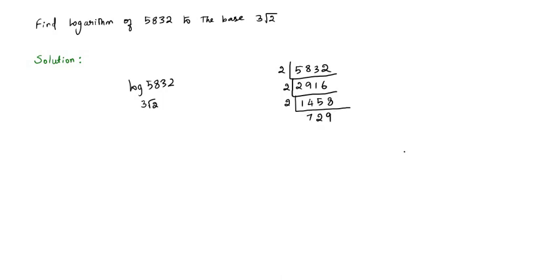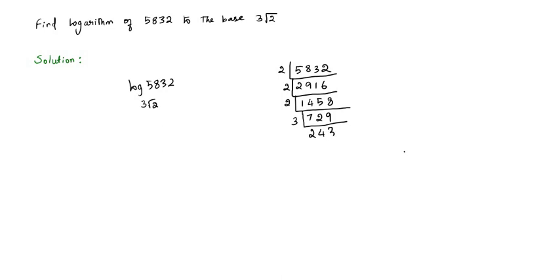Now 729 is an odd number so we cannot divide it by 2. We have to try dividing by 3. We can check whether 729 is evenly divisible by 3 by adding its digits: 7 + 2 + 9 = 18, which is a multiple of 3. So definitely 729 is divisible by 3. When you divide 729 by 3 you get 243.